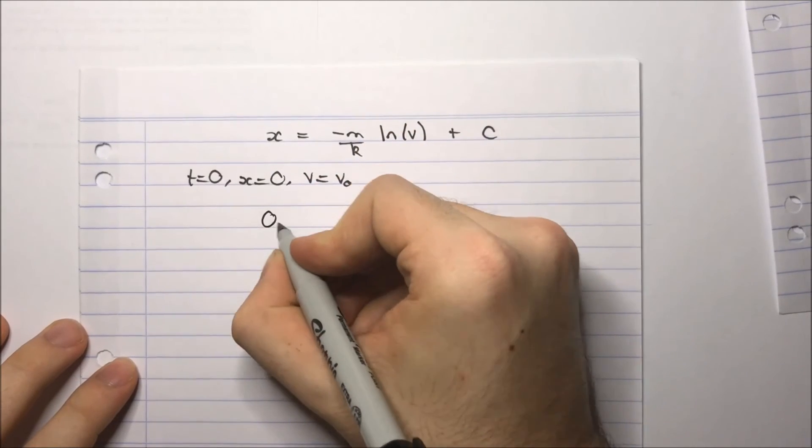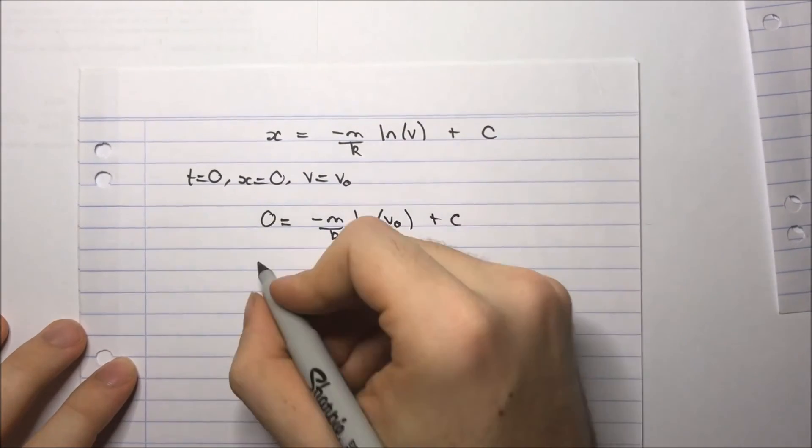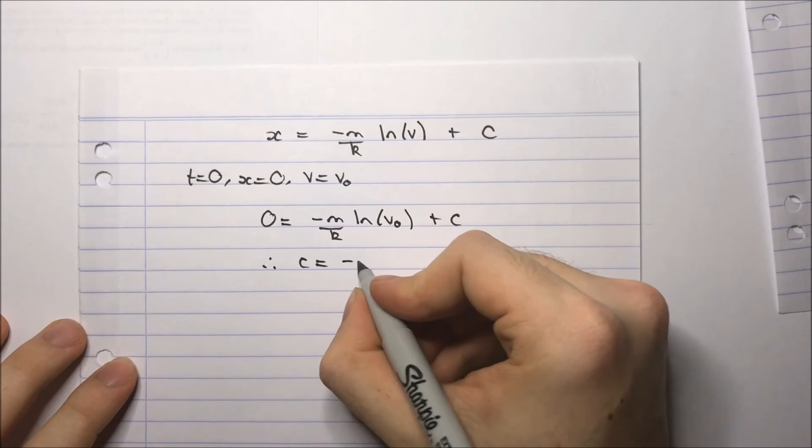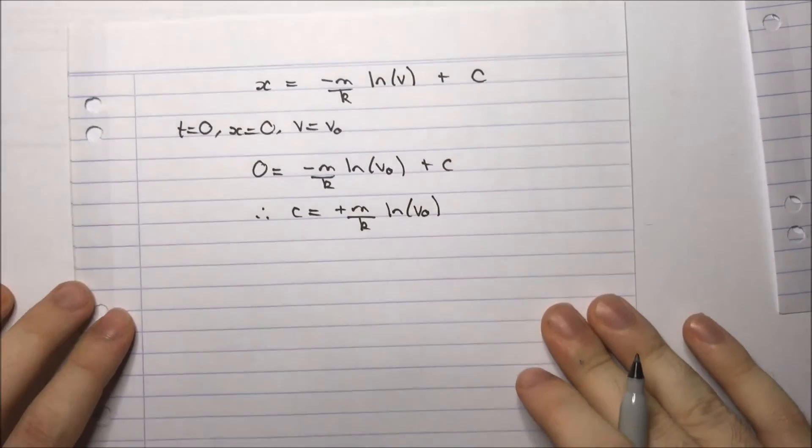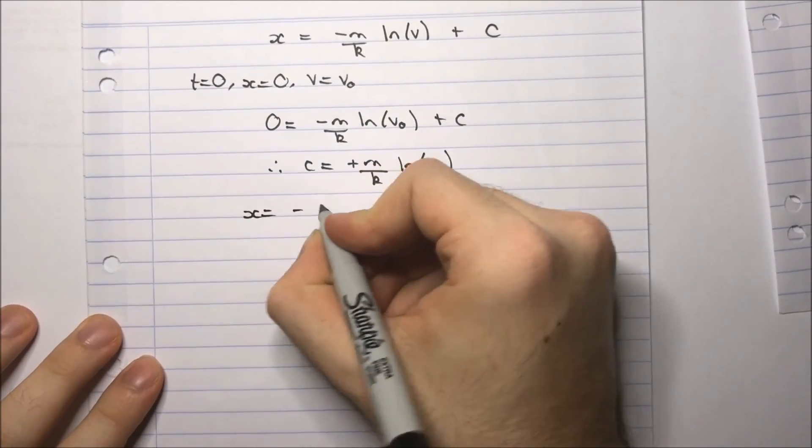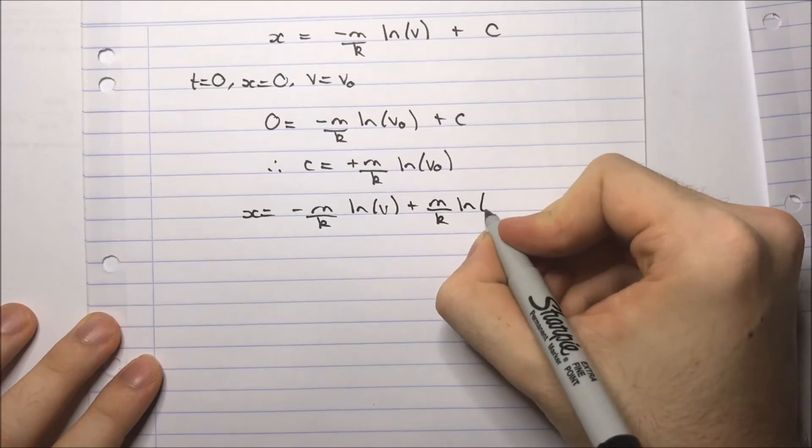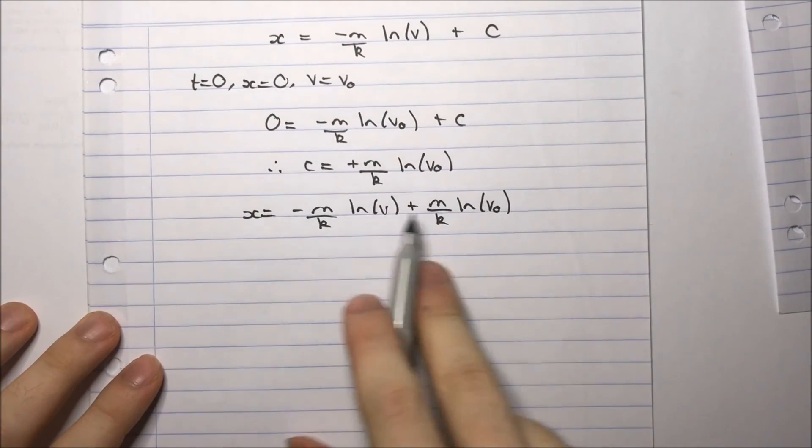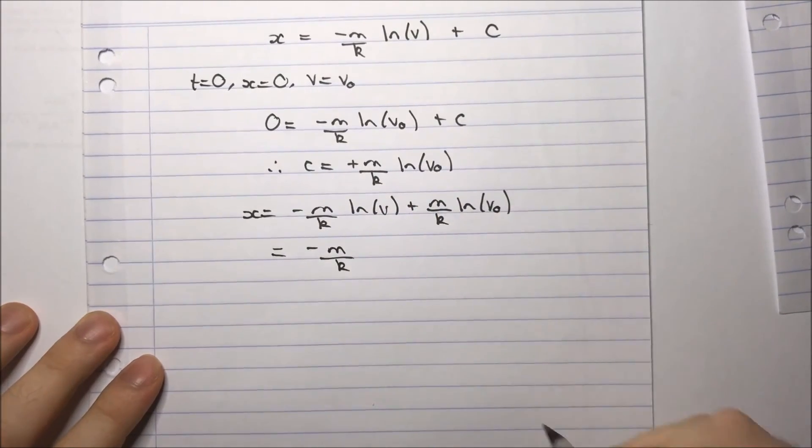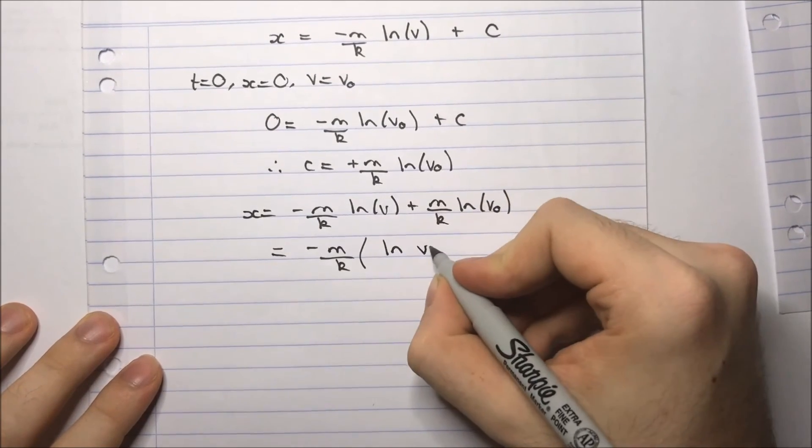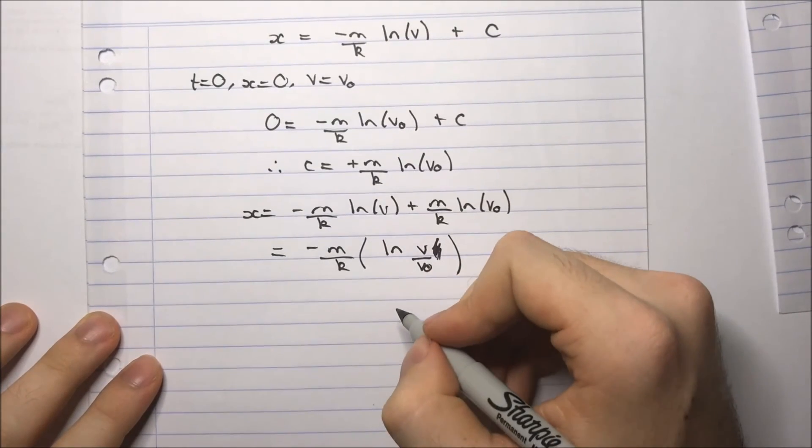So I can substitute these into this equation here. And I get 0 equals minus m/k log v0 plus c. And so moving this over to the other side, we get c equals m/k log v0. And so I have x equals minus m/k log v plus m/k log v0. And I can combine these two logs. I'll factor out minus m/k. And that will give me log v over v0.